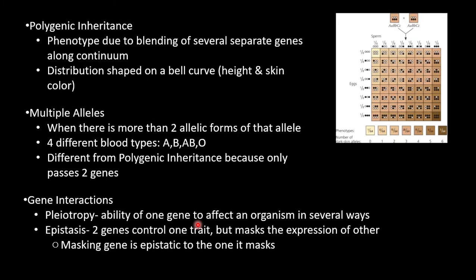Another two I get mixed up is polygenic inheritance and multiple alleles. In polygenic inheritance, the phenotype is due to a blending of several separate genes along a continuum. The distribution of the phenotypes is shaped as a bell curve. Skin color is a great example of this. As the diagram shows, three genes A, B, and C code for skin color. The passing of either the recessive or dominant alleles for each of these traits changes the skin tone each time. None is actually masking the other.